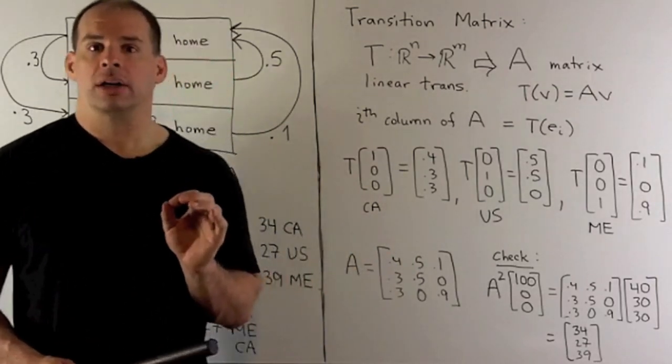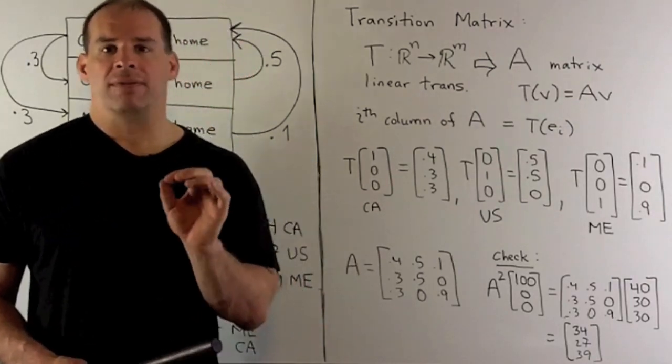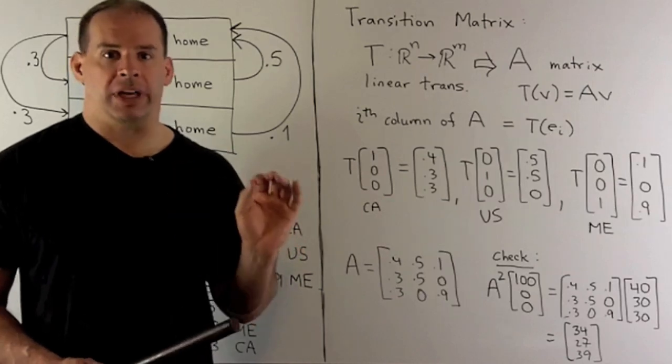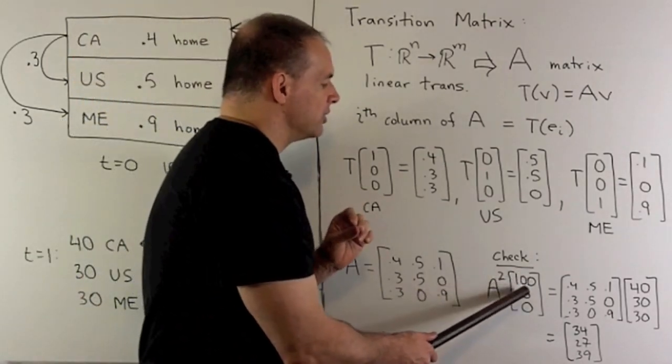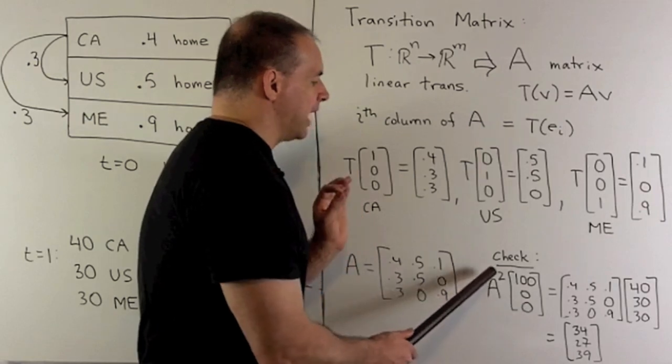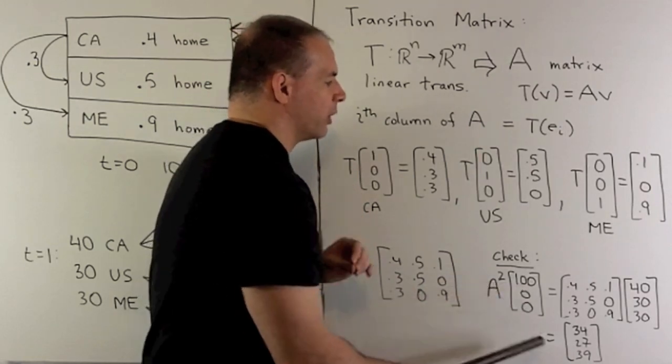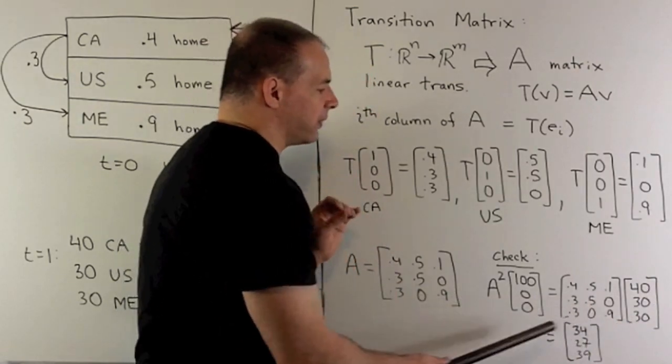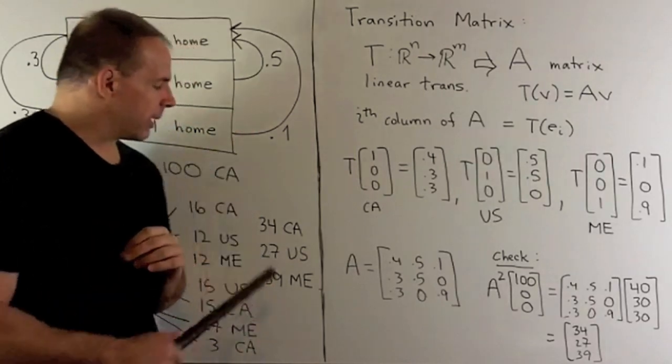To check our work, let's try it out on the problem we had earlier. I'm going to have 100 birds in Canada only. We're going to take it out two years. I'm going to multiply the vector 100, 0, 0, times A squared. If we multiply by A once, we're going to get 40, 30, 30. And then if I apply again, I get 34, 27, 39. And that agrees with my previous answer.